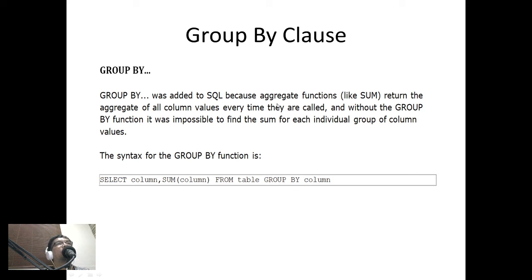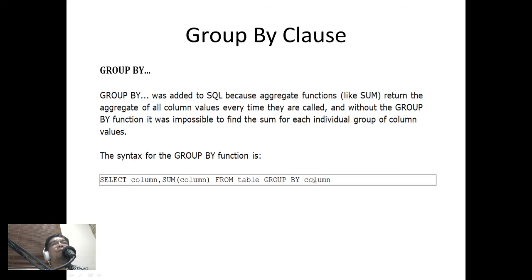The GROUP BY clause was added to SQL because aggregate functions like SUM return an aggregate of all column values, and without GROUP BY it was impossible to find the sum of each individual group. The syntax is: SELECT column, SUM(column) FROM table GROUP BY column. Whatever non-aggregate columns appear in the SELECT should also appear in the GROUP BY clause.